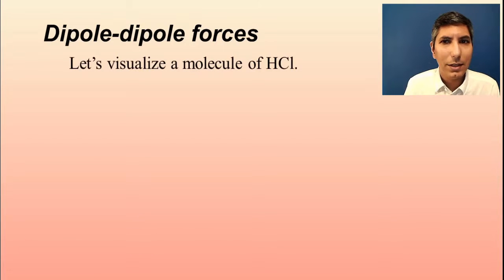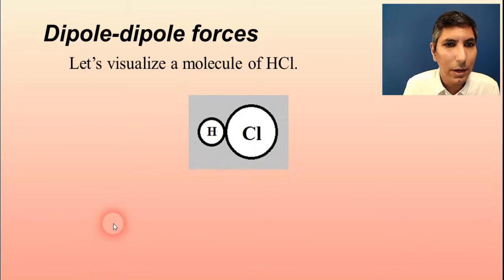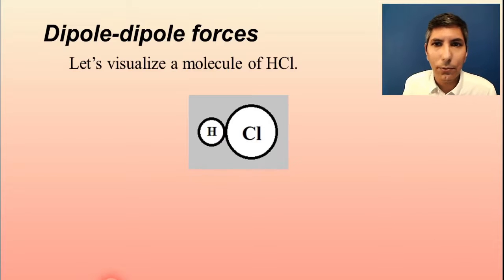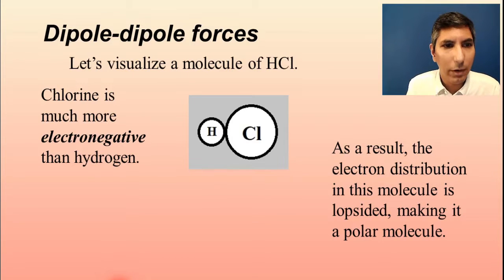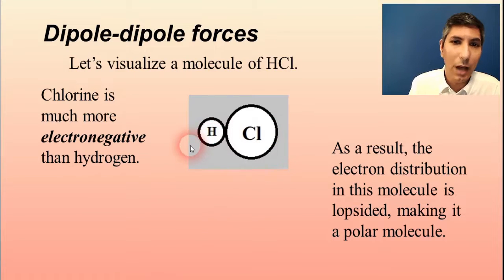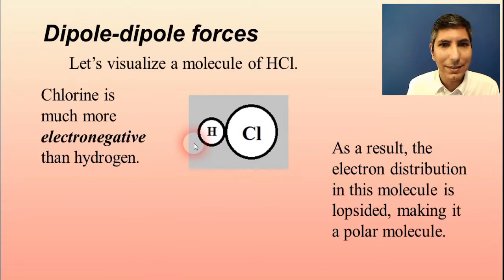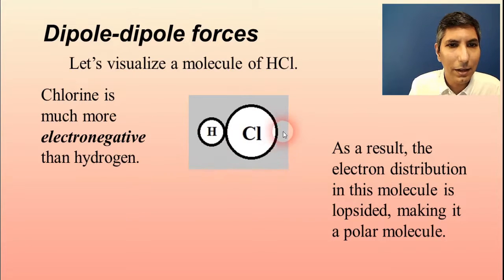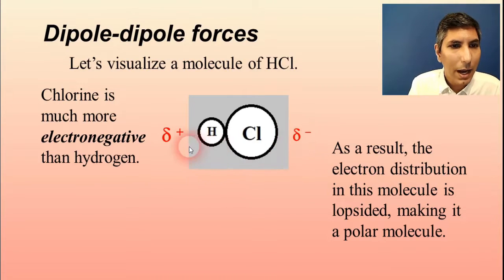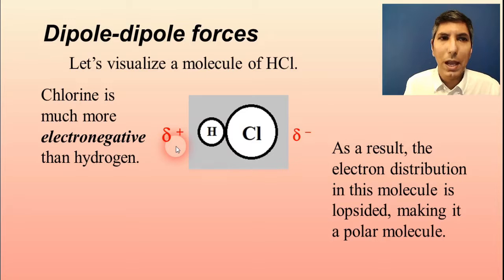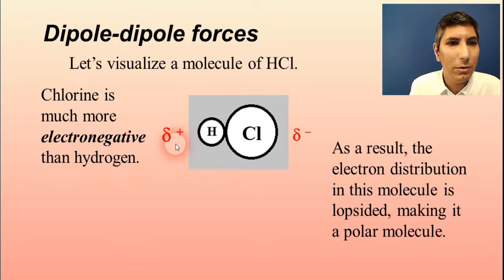To explain this, let's imagine a molecule of hydrogen chloride just floating around. We have HCl, and we know from what we've learned about molecular structure that this is going to be a lopsided structure. Chlorine is very electronegative and hydrogen is not, so the electronegative atom is going to have a partial negative charge — delta negative — and there's a partial positive on the hydrogen side, delta positive. So we have a polar molecule.